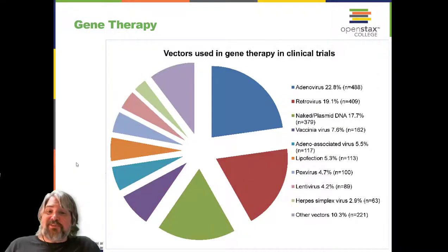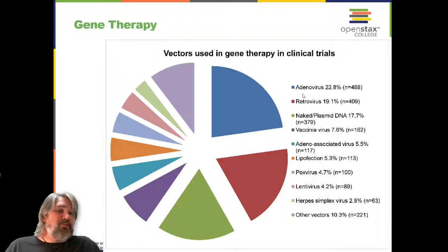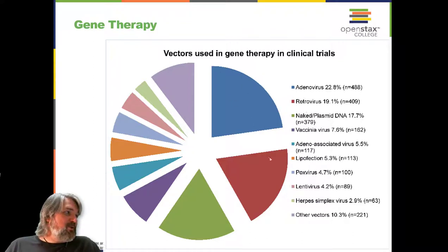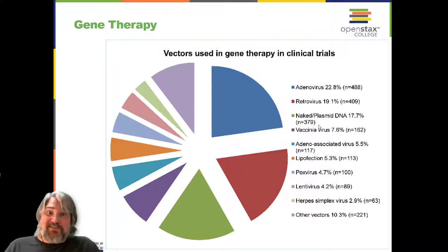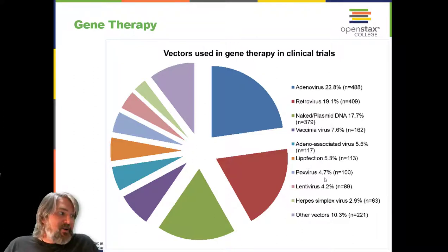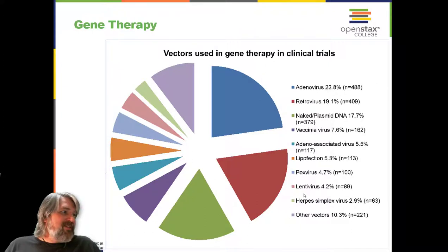The vectors being used in these gene therapy approaches include a variety of viruses. Adenovirus makes up a large component, but there are also retroviruses, attempts to use naked or plasmid DNA, and a variety of other viruses including pox virus, herpes virus, viruses related to HIV, and some other vectors.